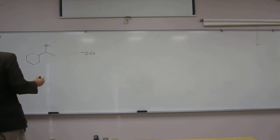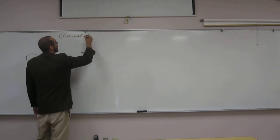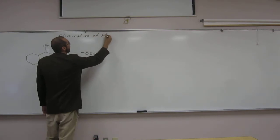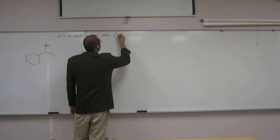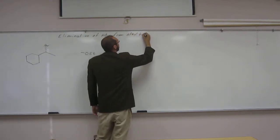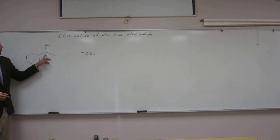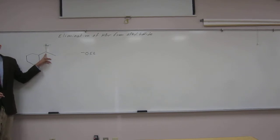So remember, what are we trying to do here? We're trying to eliminate, this is the elimination of HBr from alkyl halide. And we're going to want to deprotonate one of the alpha protons or one of the protons that's on a carbon, one carbon away from that function. Okay? Because those are acidic protons.